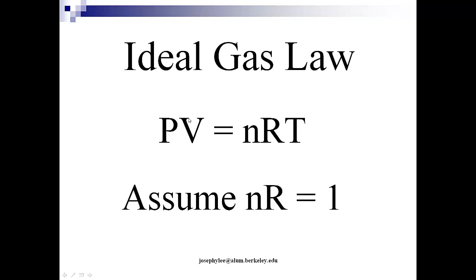This is the ideal gas law: P is pressure, V is volume, N is the number of moles, R is the ideal gas constant, and T is the temperature. Before we discuss further, let's simplify our midterm problem by setting Nr equals 1.